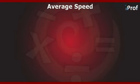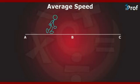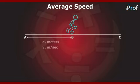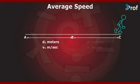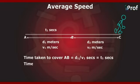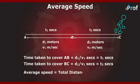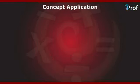Let us broaden our definition to that of average speed. Let the person start walking from point A. The person covers distance AB, that is d1 meters, with a speed of v1 meters per second, and covers distance BC, that is d2 meters, with a speed of v2 meters per second. The time taken to cover AB is t1 = d1/v1 seconds, and BC is t2 = d2/v2 seconds. Thus the average speed is total distance upon total time, which equals (d1 + d2) / (t1 + t2) meters per second.